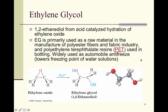Ethylene glycol (1,2-ethanediol) can be obtained from acid-catalyzed hydration of ethylene oxide. Abbreviated EG, it is primarily used as a raw material in the manufacture of polyester fibers in the fabric industry, in PET resins used for bottling, and as antifreeze because it lowers the freezing point of water solutions. Ethylene glycol is a common name you should add to your vocabulary alongside its systematic name 1,2-ethanediol.